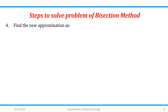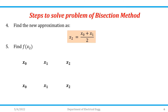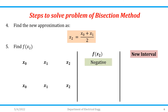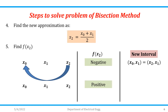Next, find the new approximation using x2 = (x0 + x1) / 2, then find f(x2). If f(x2) is negative, write the value of x2 in place of x0 for the next iteration — the new interval becomes [x2, x1]. If f(x2) is positive, write x2 in place of x1 — the new interval becomes [x0, x2].